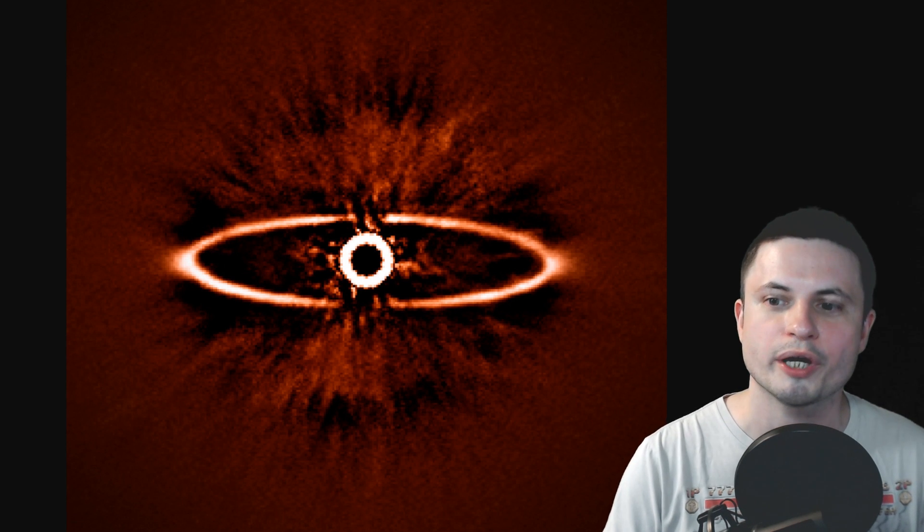Like for example, this is an image from a star system known as HR 4796A. This image is actually known as Eye of Sauron. You can probably guess why. And the Tholines here were detected by the Hubble telescope.